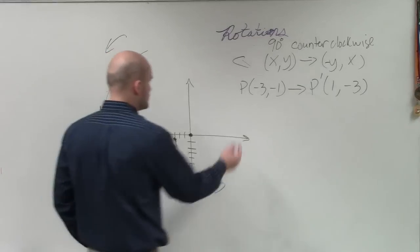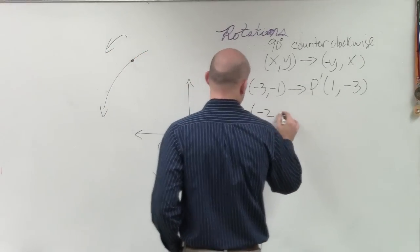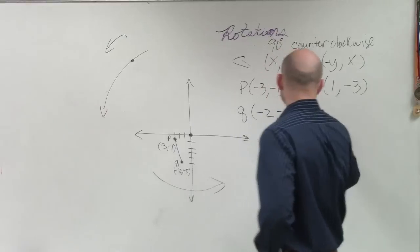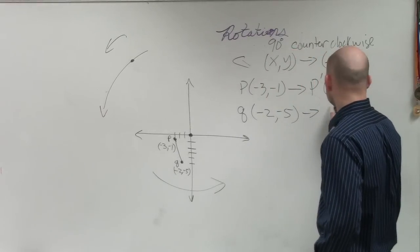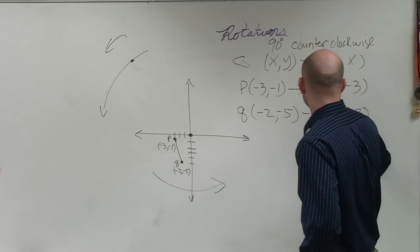The next one. Let's go and look at Q. Q is at negative 2, negative 5. So now that turns to 5, negative 2. Oh, sorry, that's Q prime.